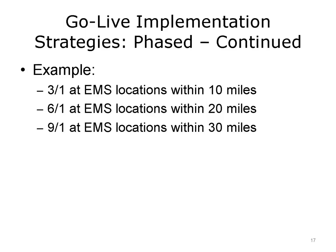In the EMS example, if the goal is to ultimately remove fax machines, a phased approach would require supporting dual processes for an extended period — continuing to support faxing EKGs to the emergency department while simultaneously supporting the mobile application. However, the phased approach can lead to earlier adoption of new technology. Targeting EMS locations within 10 miles of the hospital as the first phase — representing the majority of ambulance service — could be a significant win for patients, clinicians, EMS professionals, and IT, since most customers would be served in the earliest phase.